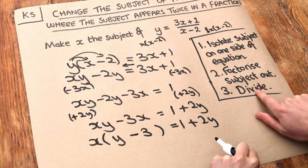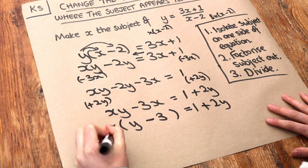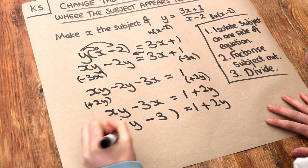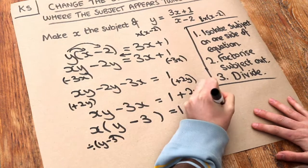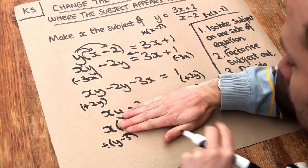And then the final step is to divide appropriately. x has been multiplied by y minus 3. So therefore, to get rid of that times by y minus 3, we just divide by y minus 3. So that gets rid of the y minus 3 on the right-hand side, leaving just x.